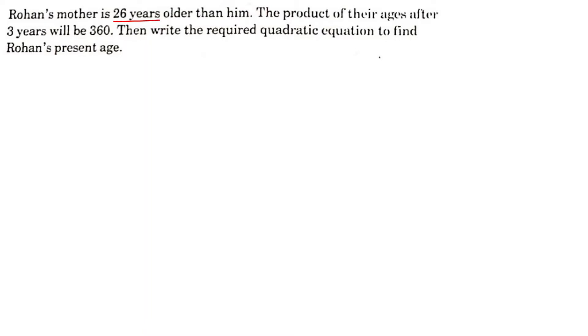Problem 1: Rohan's mother is 26 years older than him. The product of their ages after three years will be 360. We need to write the required quadratic equation to find the present age of Rohan.